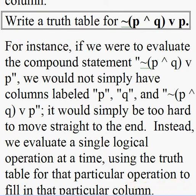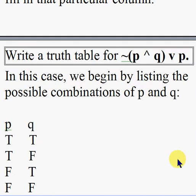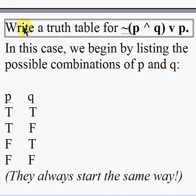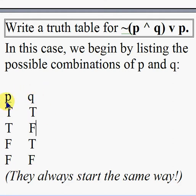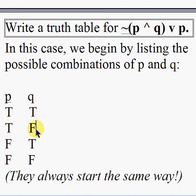So let's write a truth table for NOT the quantity P AND Q, OR P. We begin by listing the possible combinations of P and Q. We write P then T, T, F, F — true, true, false, false — then we write Q going true, false, true, false. This way all four possible combinations are represented.